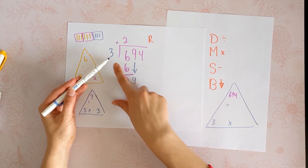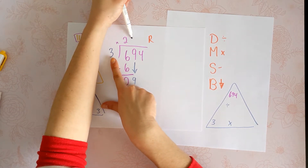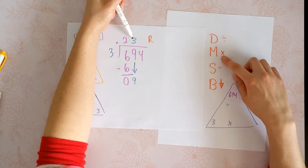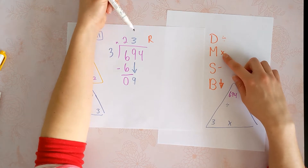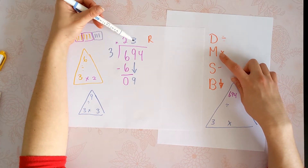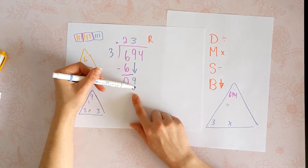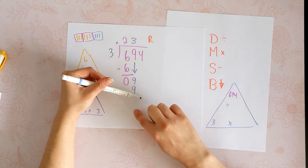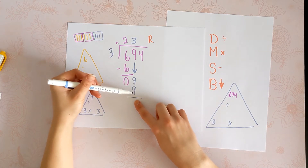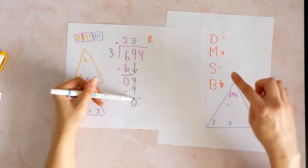9 divided by 3 is 3. I'll put it right there. Now we do our next step, which is multiply. We're going to use the last thing we touched and this 3 here — 3 times 3 is 9. Subtract: 9 minus 9 is 0, just like before.